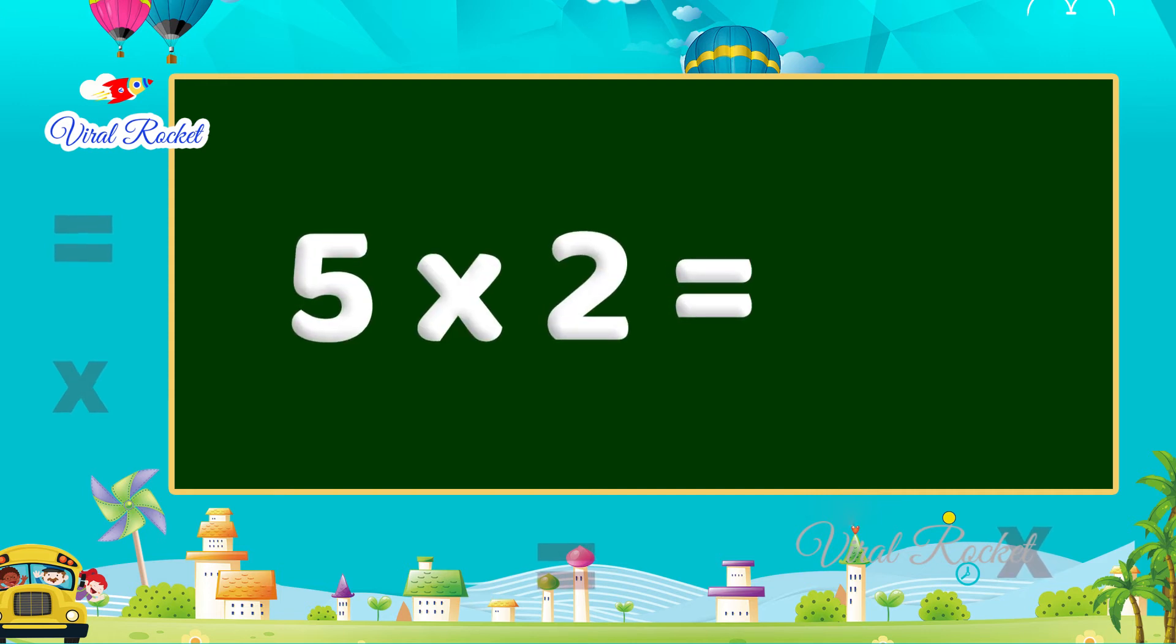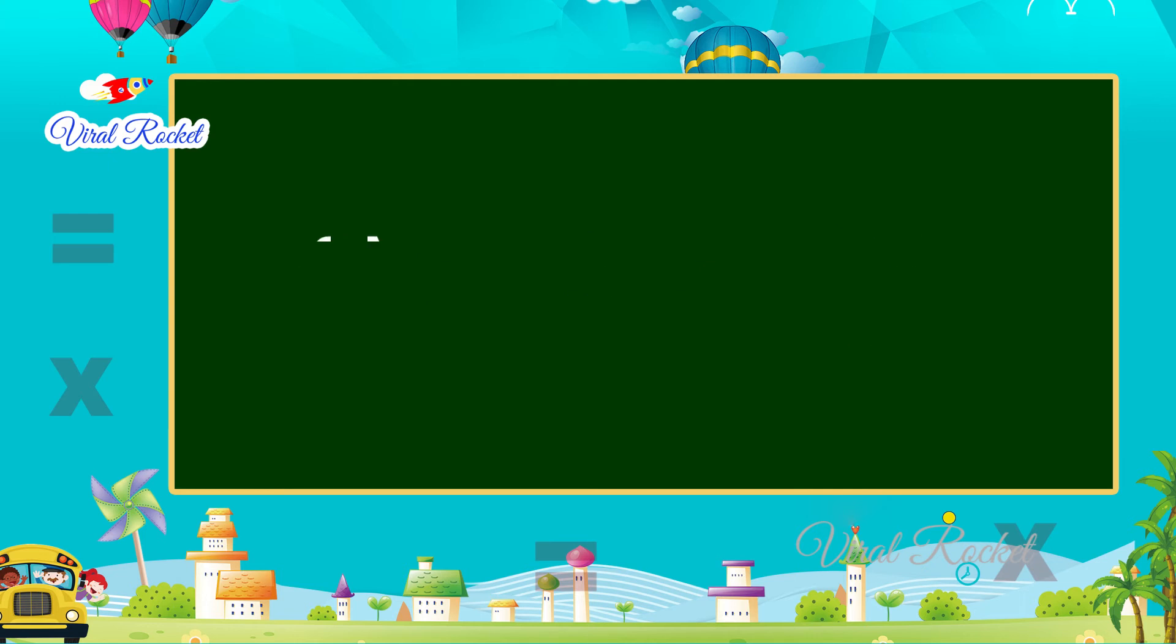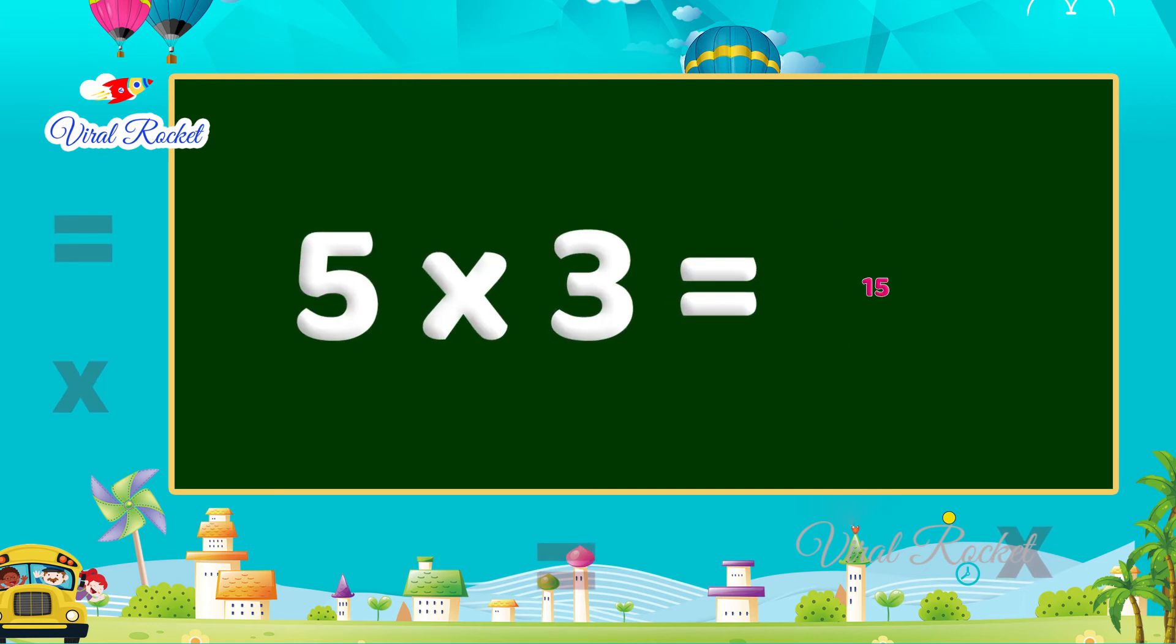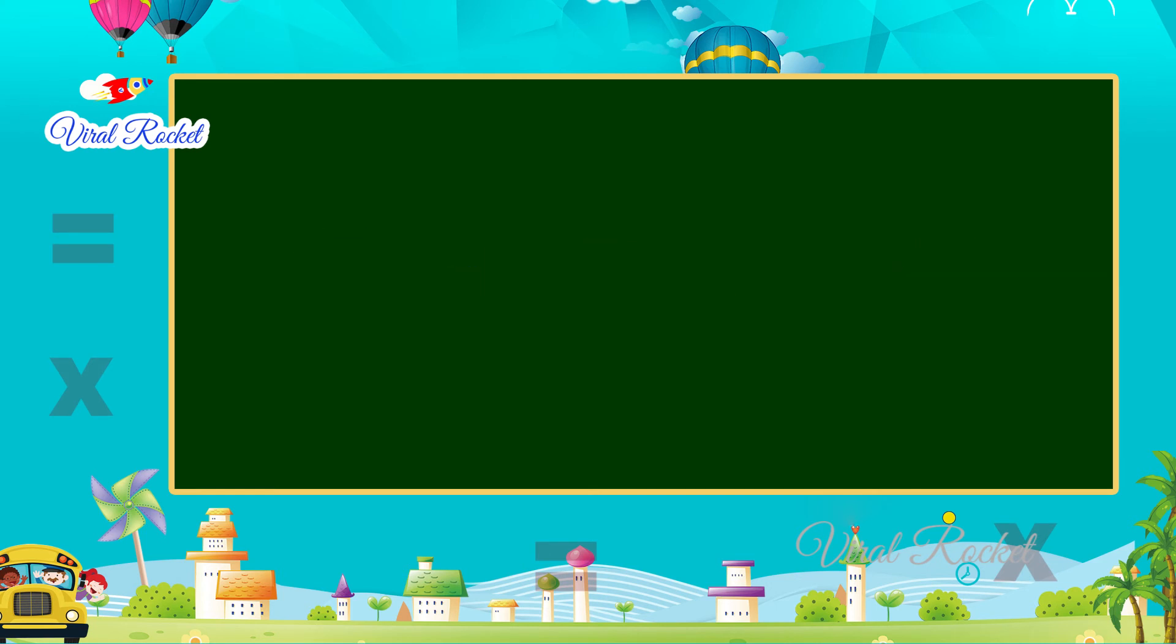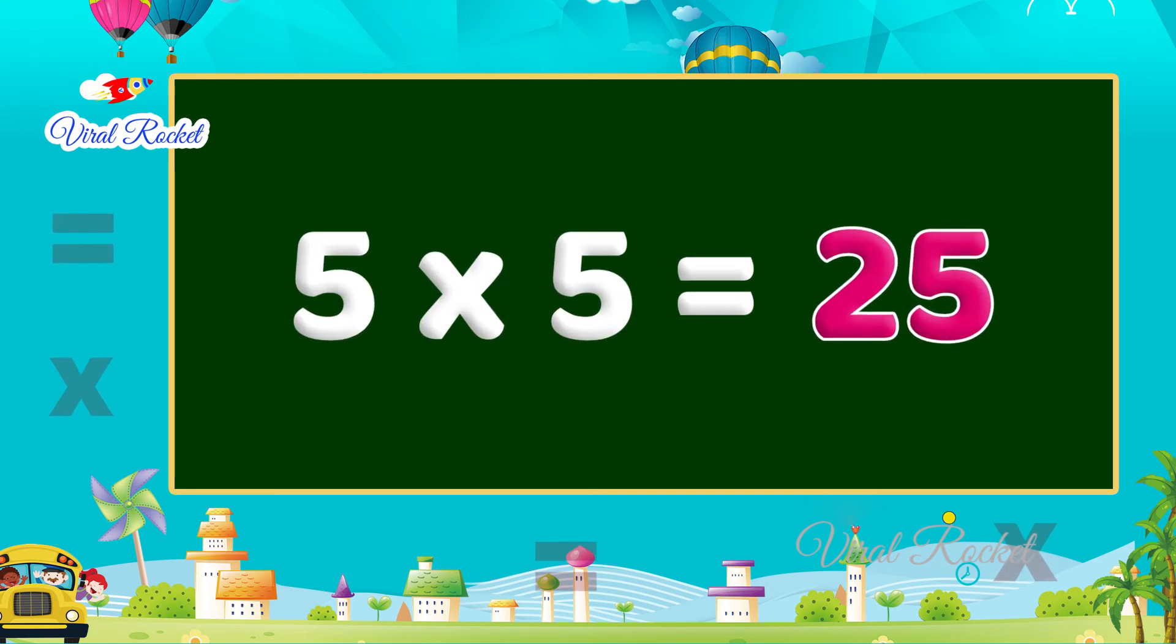Five twos are ten, five threes are fifteen, five fours are twenty, five fives are twenty-five, five sixes are thirty.